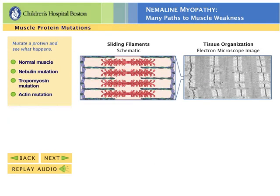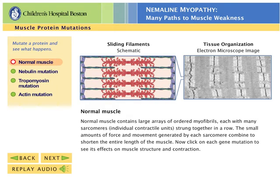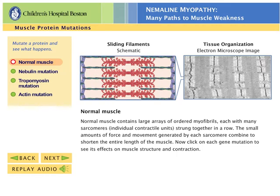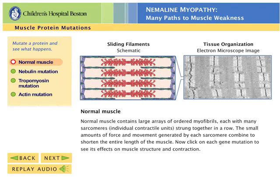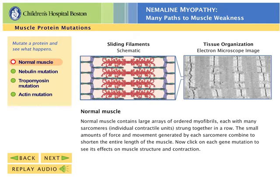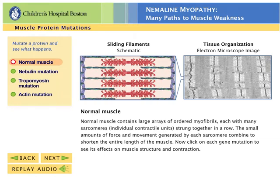Here you see a schematic diagram of a single contractile unit, or sarcomere, with its thick and thin sliding filaments. On the right is an electron microscope picture of actual muscle tissue. In healthy muscle, the tissue is highly organized, and the sarcomeres are arranged in orderly rows.